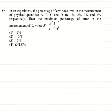Alright friends, in this question we are given an experiment where the percentage of error in the measurement of physical quantities A, B, C, and D are 1%, 2%, 3%, and 4% respectively. So four physical quantities are given.